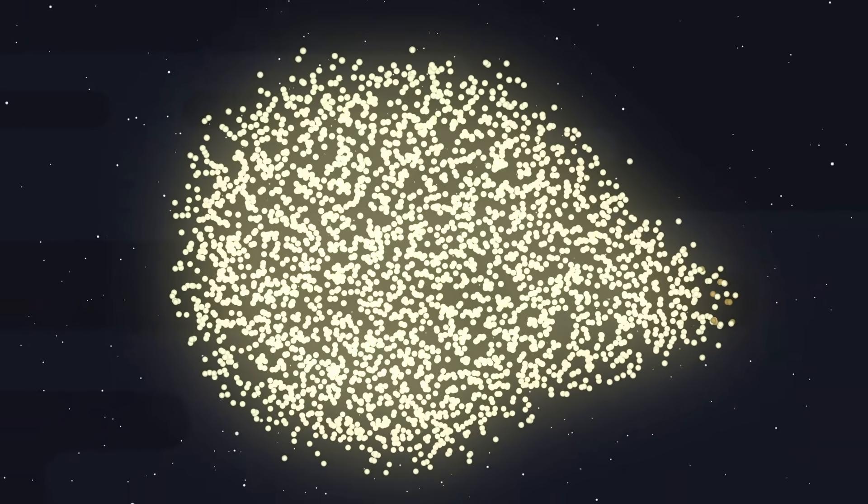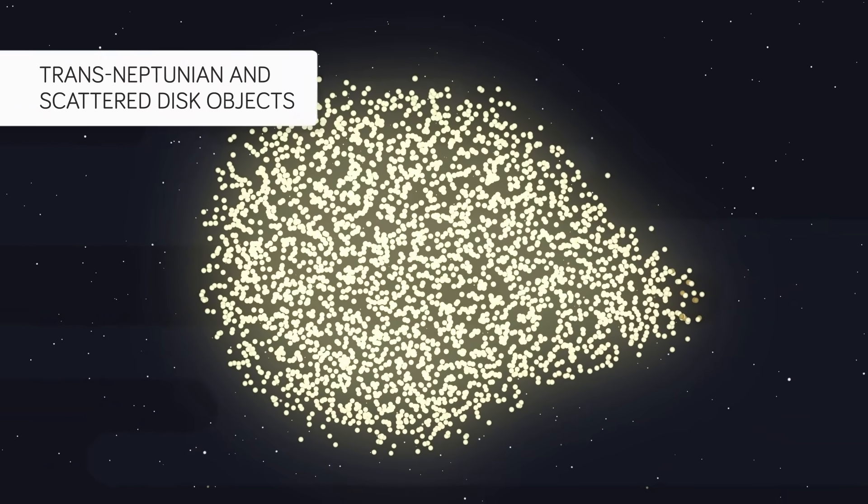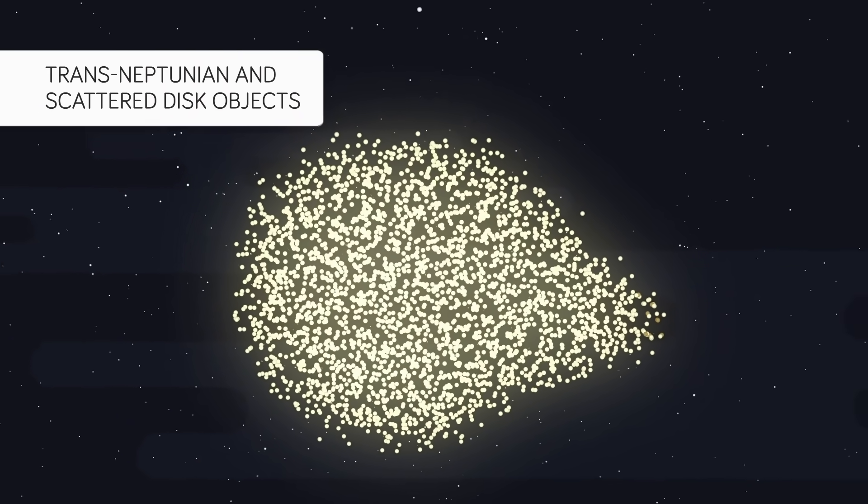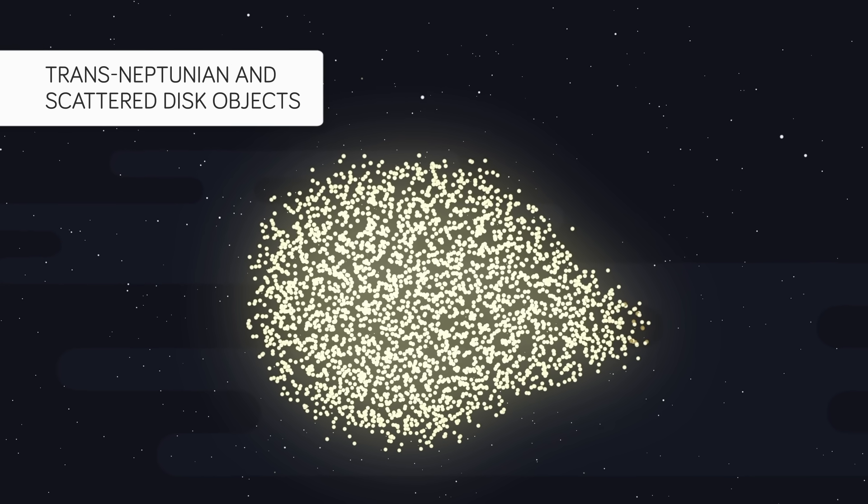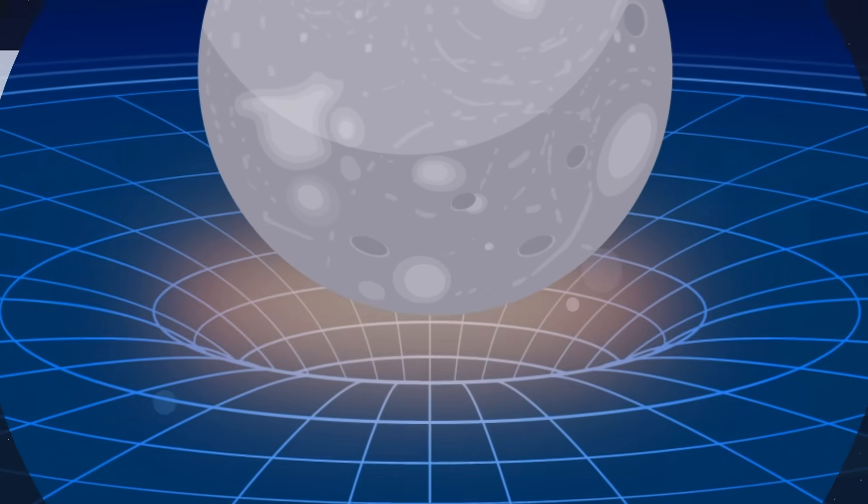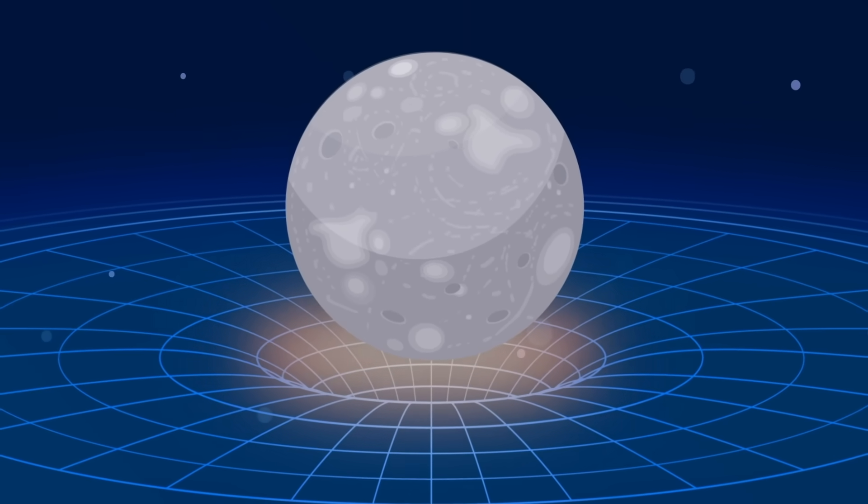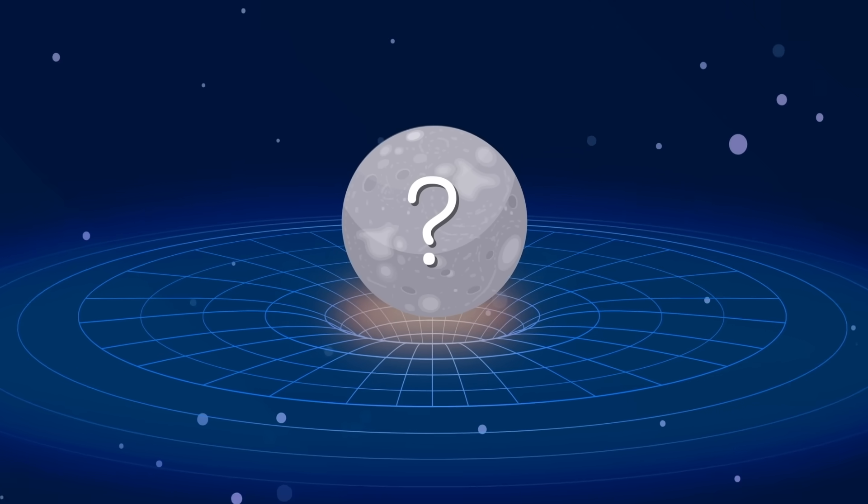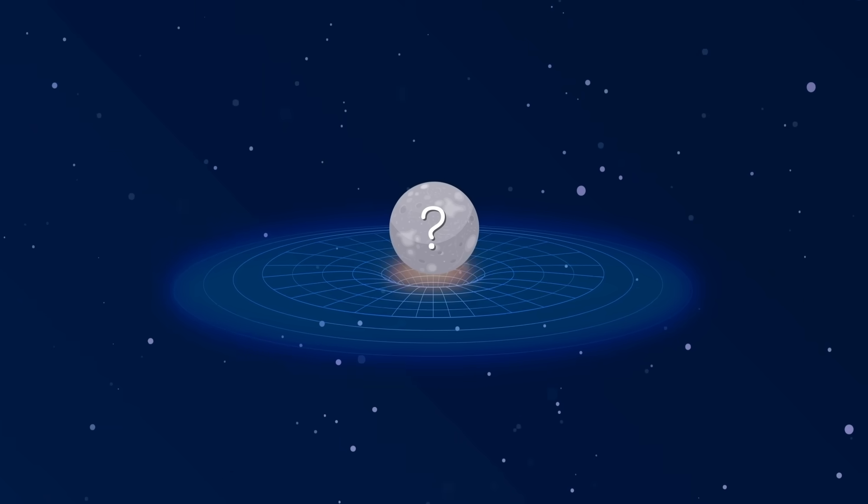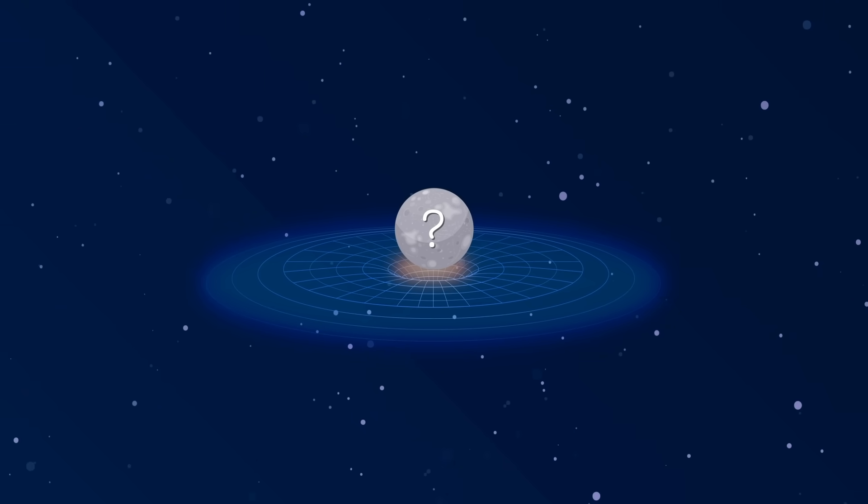Irregularities in the orbits of trans-Neptunian and scattered disk objects, bodies lingering beyond Neptune, suggest the presence of an unseen force. These gravitational disturbances hint at a hidden giant, an unaccounted for source of gravity, subtly shaping their movements through the solar system's distant reaches.